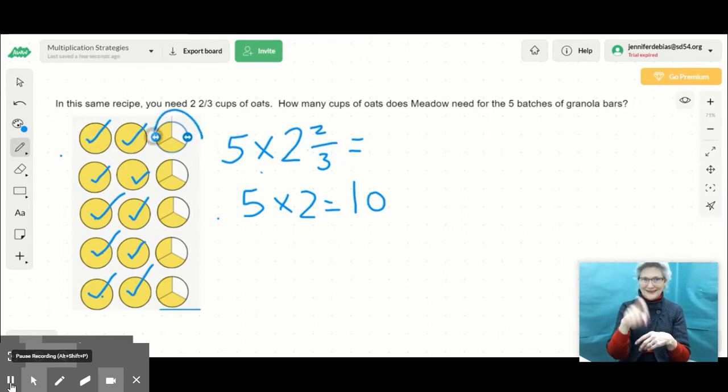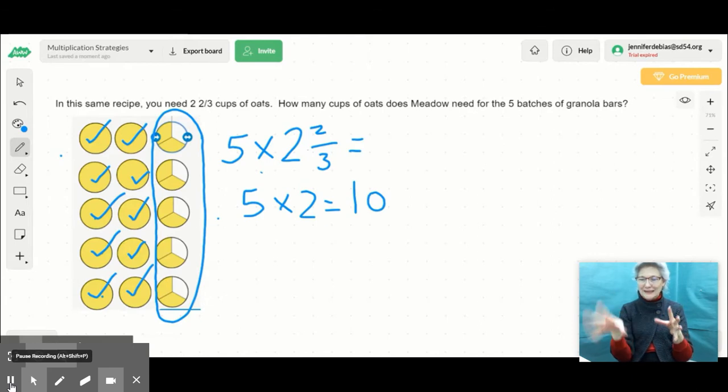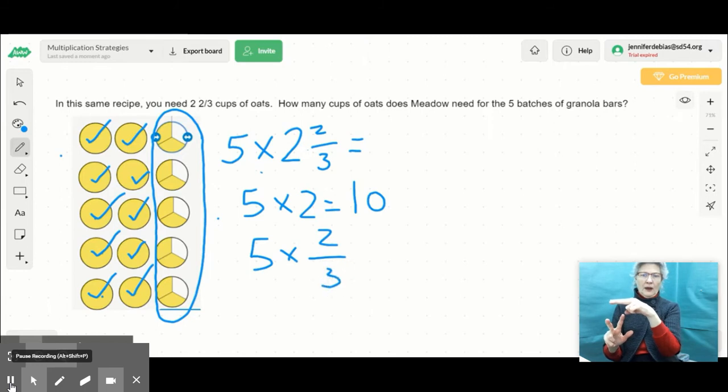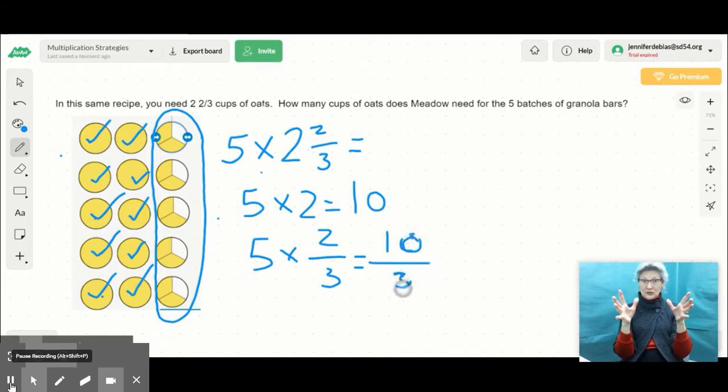But then here I still have these fractional pieces that I need to add in. So I know that that's 2/3 five times. So I did 5 times 2 for my wholes, right? But now I'm going to do 5 times 2/3. This may look familiar because we're actually using the distributive property. We're doing 5 times 2 plus 5 times 2/3. Well, using the same strategy we've been working on the last couple lessons, 5 times 2/3 is 10/3. So I know that I'm not done though. I need to add these together just as we do when we use the distributive property. So I know that my answer is 10 plus 10/3.